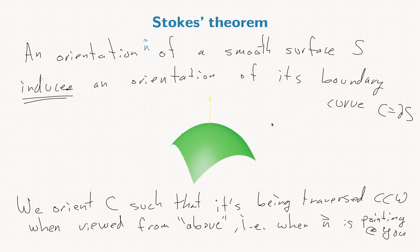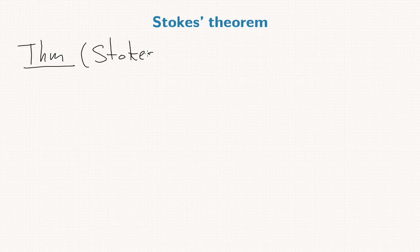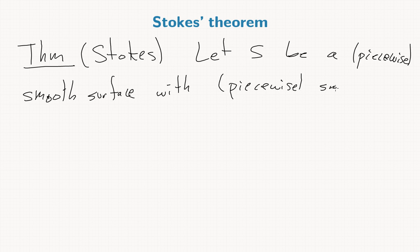So now with this convention, Stokes' theorem says: Let S be a piecewise smooth surface with piecewise smooth boundary curve C. And we'll let F be a continuously differentiable vector field. Again, that means that each of the component functions of F are continuously differentiable.